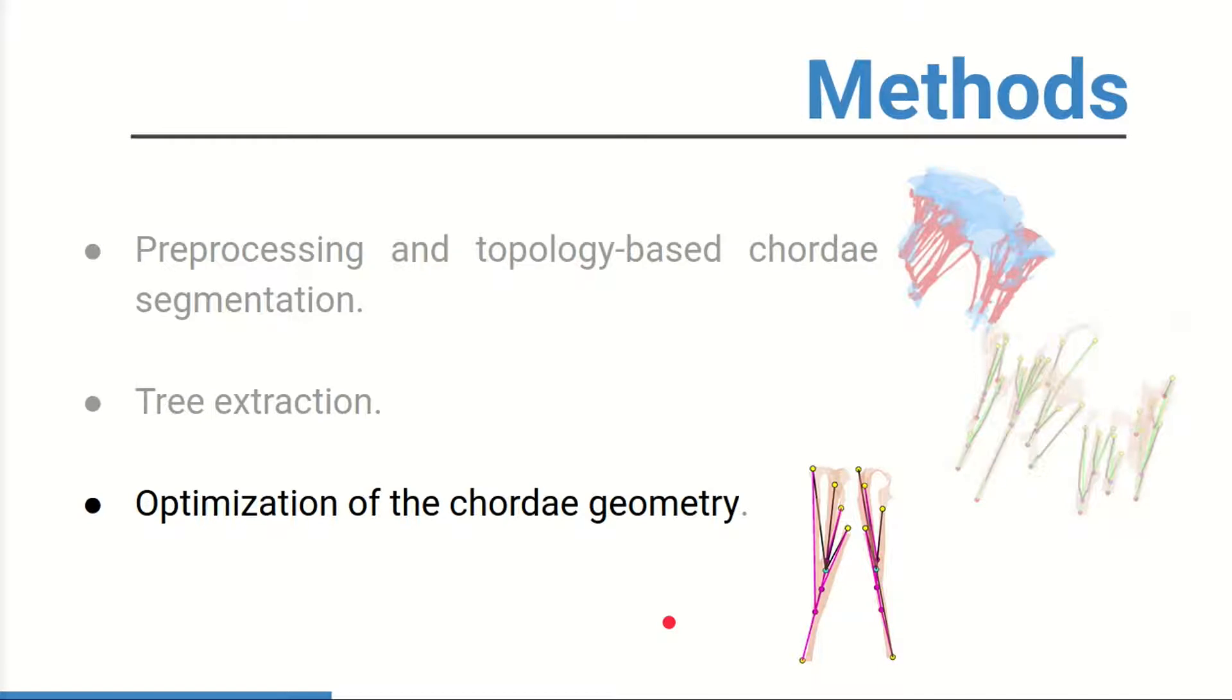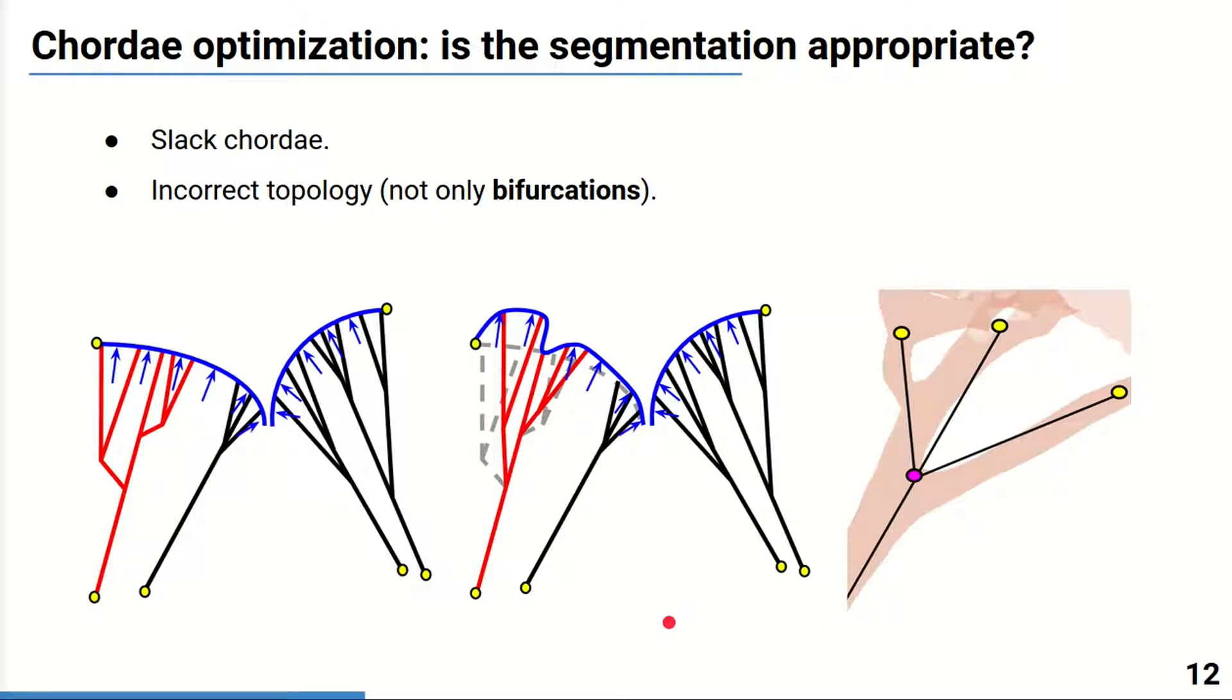Before the simulation, we must ensure that the obtained chordae trees are consistent with the biomechanical model. The trees may be not directly suitable because of, first of all, the slack presence. In our case, the initial configuration corresponds to the closed valve state. Chordae have to be in tension. And the chordae having slack, schematically shown here in red, may cause unrealistic simulation outcomes, for example, bulging.